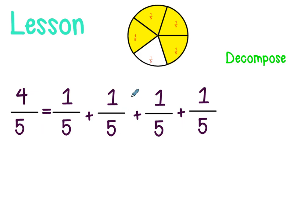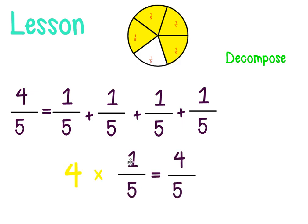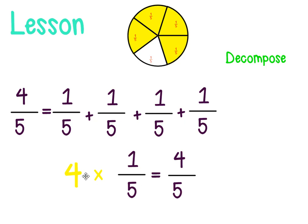Now let's start our lesson with decomposition. In our model we have four fifths. One way to show four fifths is to break it into unit fractions: one fifth plus one fifth plus one fifth plus one fifth. This is called decomposing. Since this is repeated addition, we can write it as multiplication — four times one fifth. So four fifths is the fourth multiple of one fifth.